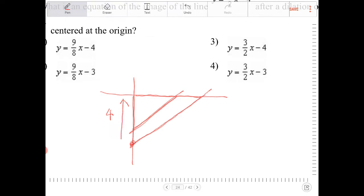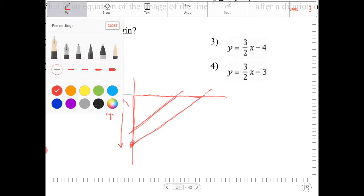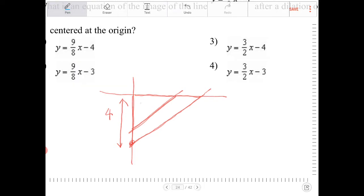So if the original was 4, this line, I'm going to use a different color now, this line is going to be 3 fourths dot. So what's 3 fourths of 4? Well, that would be 3.